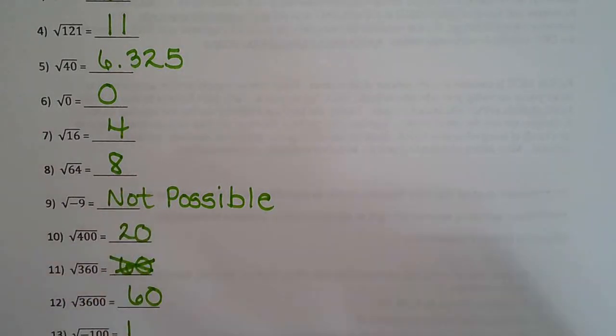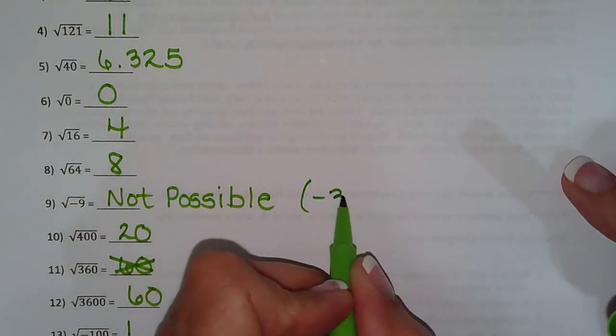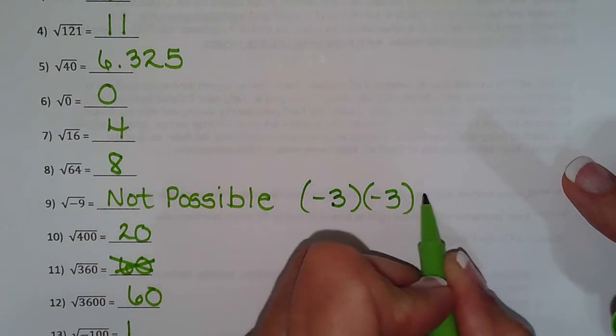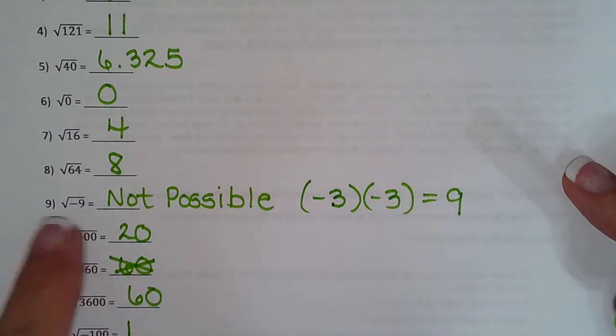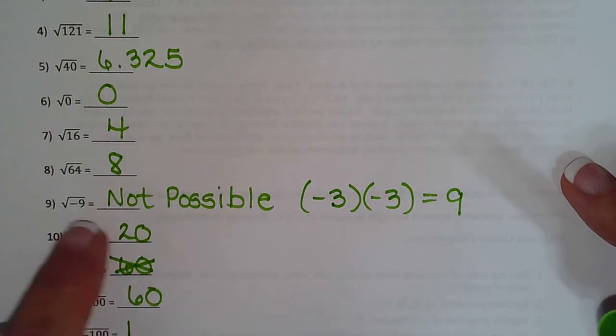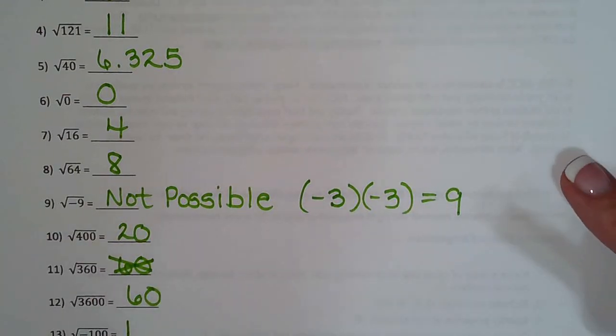And here we wrote not possible and that's because negative 3 times negative 3 is positive 9, not negative 9. So that's why it's not possible. There's no number times itself which will give me negative 9. And any number times itself will always give me a positive number.